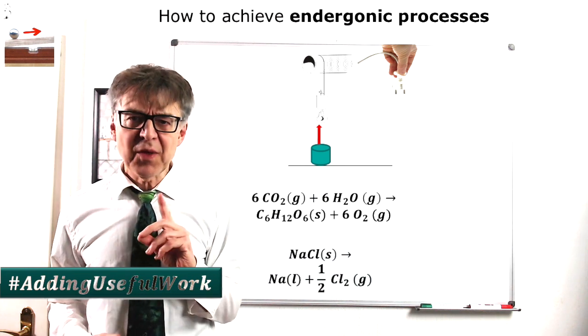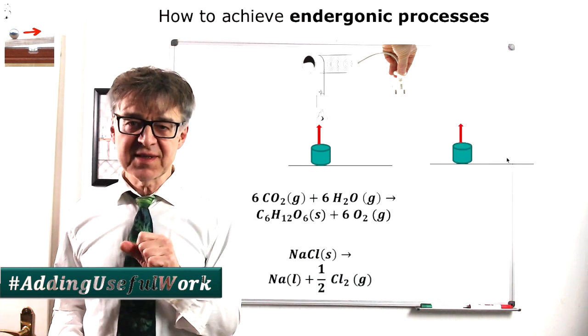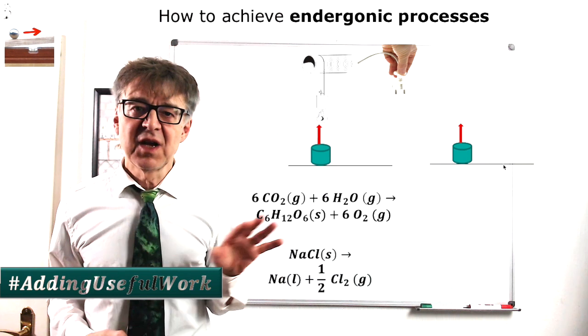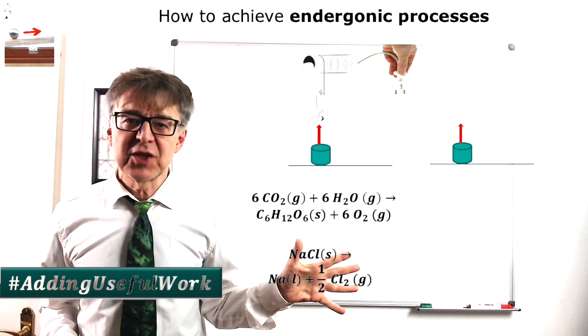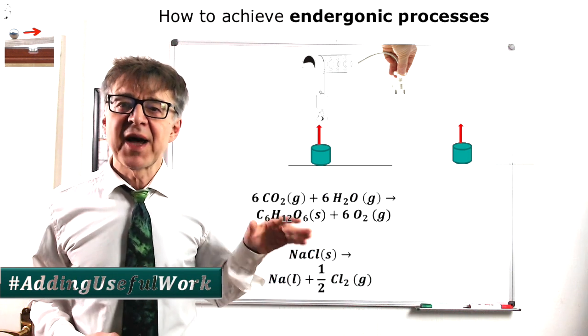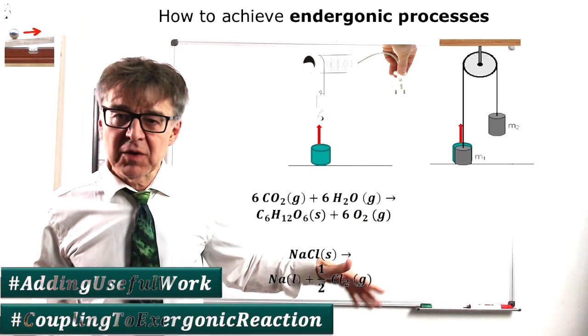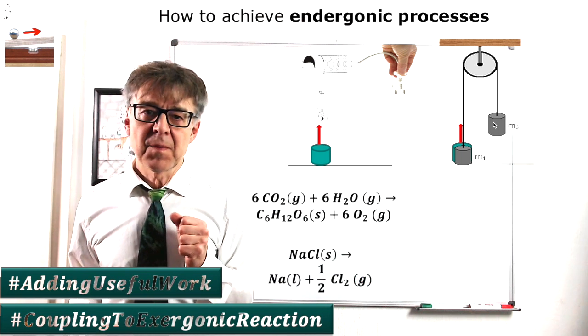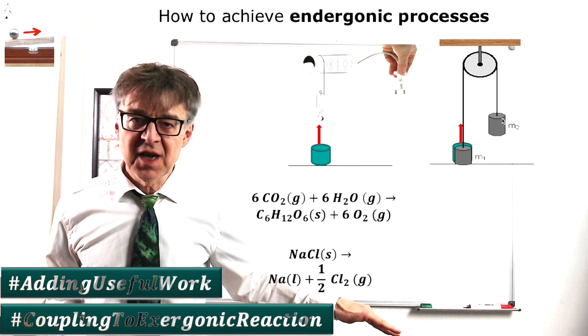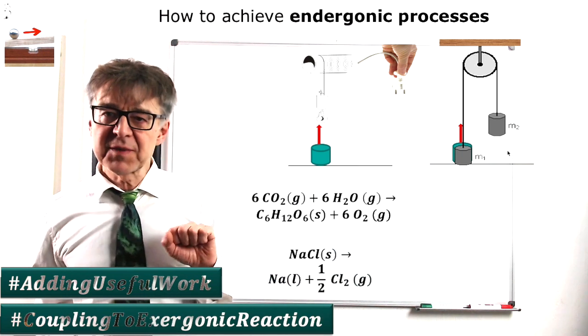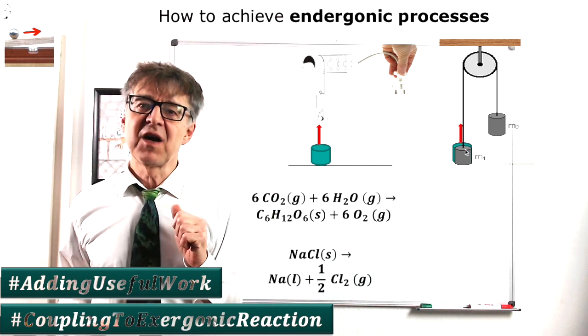There is another way to lift the weight here. We have to connect another process which has a large affinity to the persistent endergonic process. In our mechanical analogy, this can be done by a linkage which moves another larger weight down from a certain height. The weight falling down is a spontaneous process and we link this exergonic process via a pulley to the first non-spontaneous lifting of the first weight.